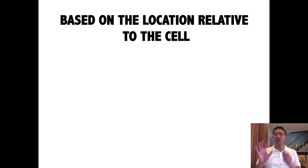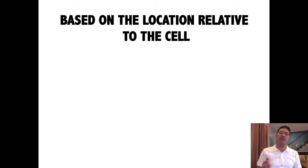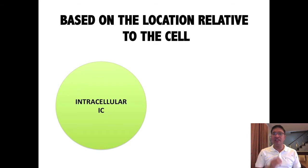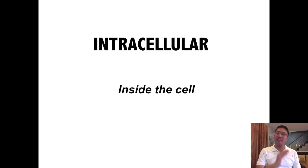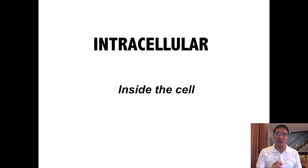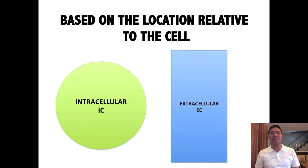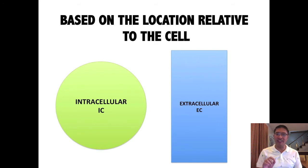We have to know the different compartments based on the location relative to the cell. We have what we call the compartment inside the cell, and this is known as the intracellular, simply known as IC. But if the compartment is outside the cell, then this is what we call extracellular, or EC.